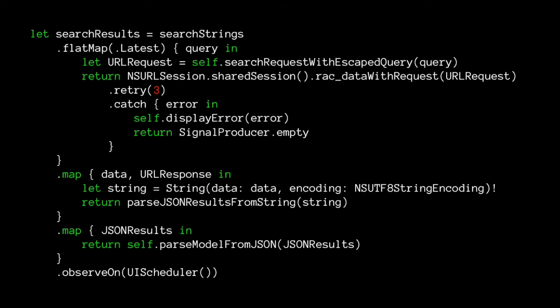The other thing we can add is retry. You can imagine how much work retry would be in traditional programming - you'd need a counter for how many times you've retried, catch each error, probably do a weird recursive call back into your function. It would be an absolute nightmare. Reactive Cocoa lets you just say 'retry(3)'. This handles all the work of doing the retry for you. This is a great example of that earlier quote - telling the program what to do instead of how. Someone else has already done the work of handling retry, so we just say 'do that thing, you already know how to do it.'